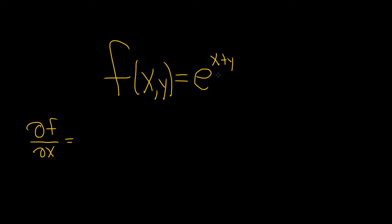So here you have an exponential function. This is a function of two variables. So keep in mind, the derivative of e to the x is e to the x. So here it's e to the x plus y. So it'll be e to the x plus y, and then times the derivative of the inside.